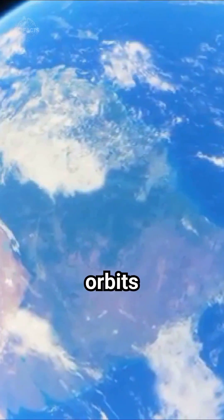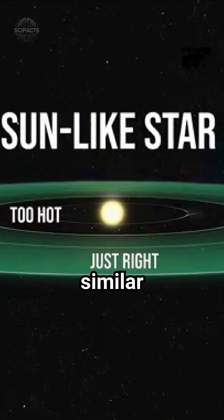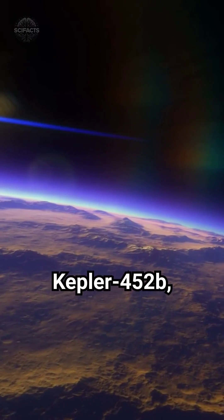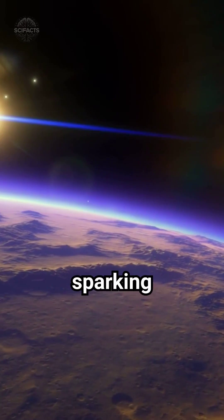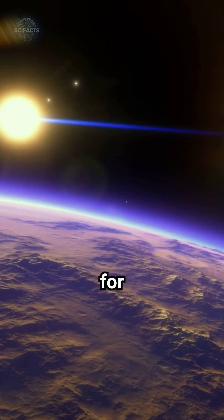The exoplanet orbits within the habitable zone of its star, Kepler-452, a G-type star similar to our Sun but older and slightly larger. This makes Kepler-452b one of the closest analogues to Earth that we've found, sparking discussions about whether it could support life or even be a future destination for humanity.